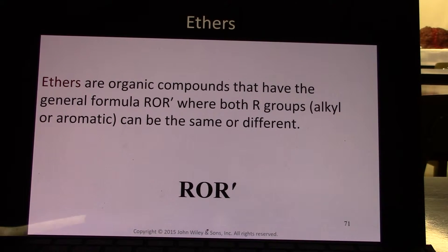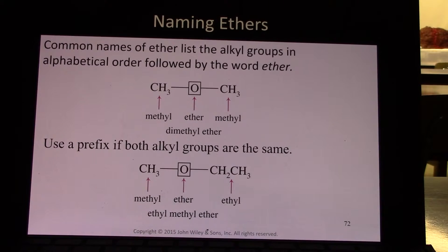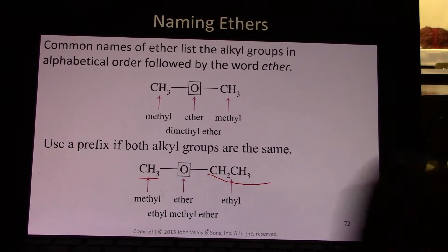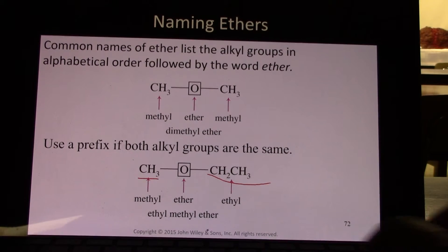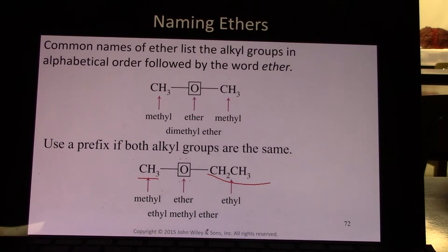Ethers are organic compounds that have the general formula R-O-R', where both R groups are organic. They can be alkyl or aromatic, and they can be the same as each other or different from each other. So here we have dimethyl ether, with a methyl on each side, and here is methyl ethyl ether. As long as there are two organic substituents on this oxygen, it is an ether.